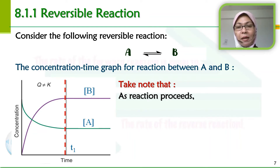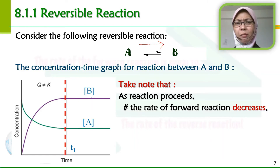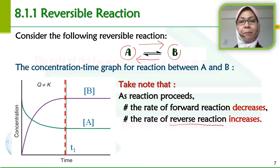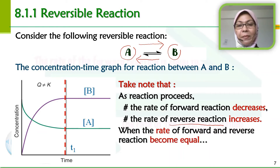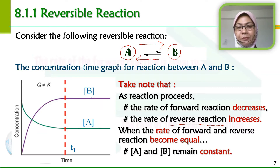Perhatikan juga bahawa as reaction proceeds, rate of forward reaction — maksudnya daripada A menjadi B — mula-mula dia akan menjadi B dengan begitu cepat sebab B itu belum ada. Tapi lepas beberapa ketika, kadar B menjadi A — reverse reaction — semakin meningkat. Apabila rate of forward reaction telah menjadi sama dengan kadar B menjadi A, maka kepekatan A dan kepekatan B tidak akan berubah lagi sebab kadar mereka sudah sama. The concentration of A and B remain constant.